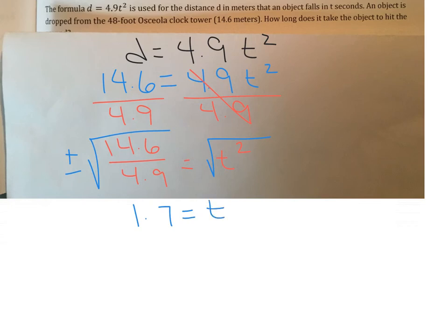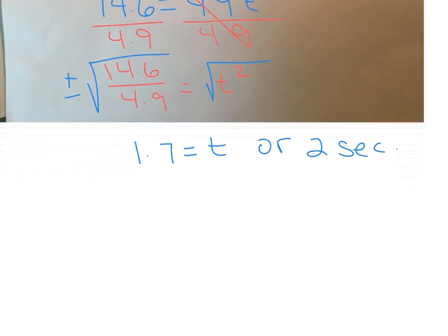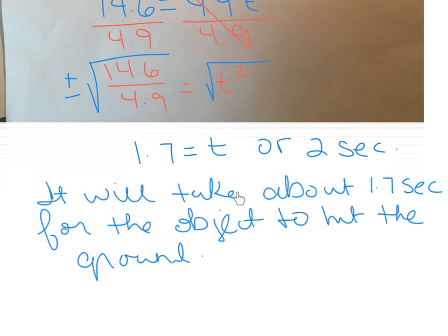The directions did not tell us how to round this, so I would leave it as 1.7. If you wanted to round it to the nearest whole number, that would be approximately 2 seconds. But you're going to always watch the rounding directions. There aren't rounding directions for this question, so either of those answers would be appropriate. In a complete sentence, it will take about 1.7 seconds for the object to hit the ground.